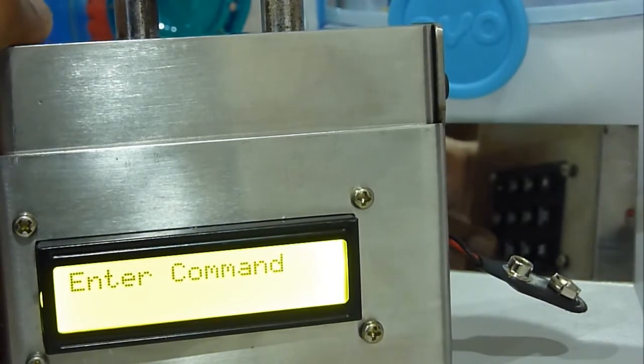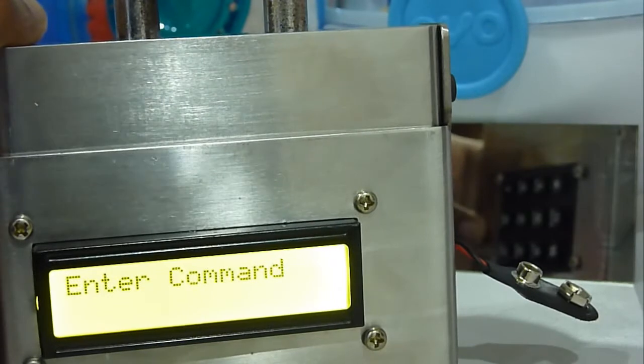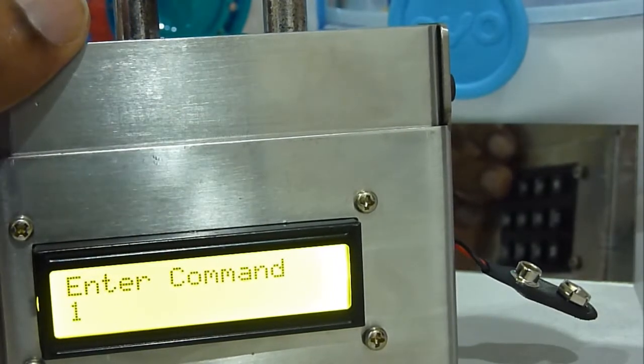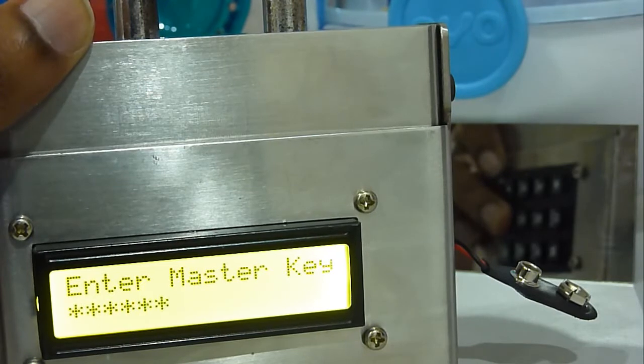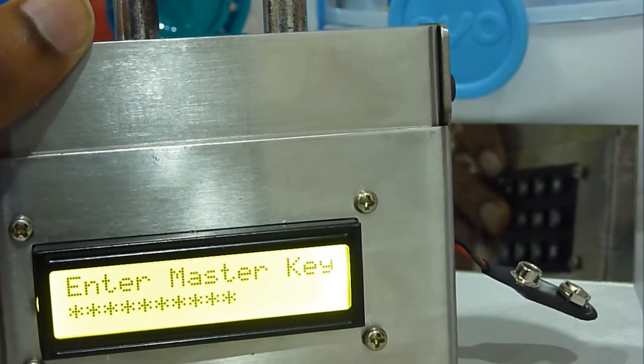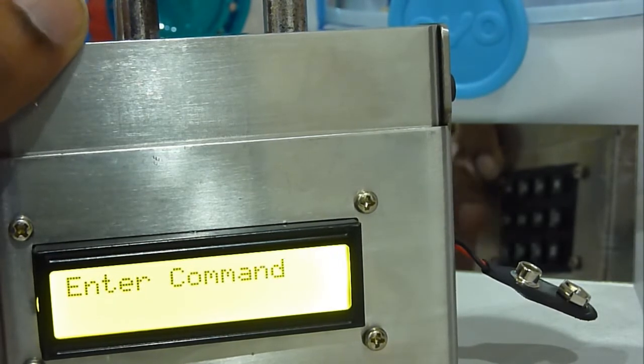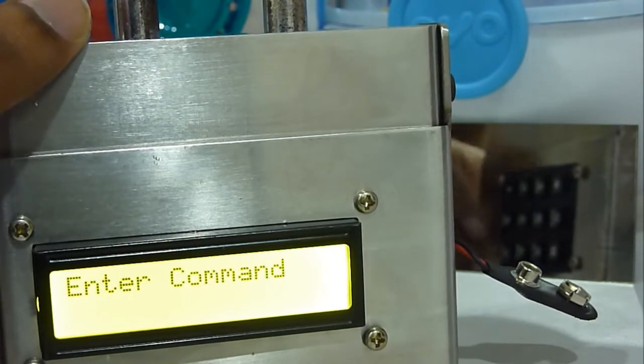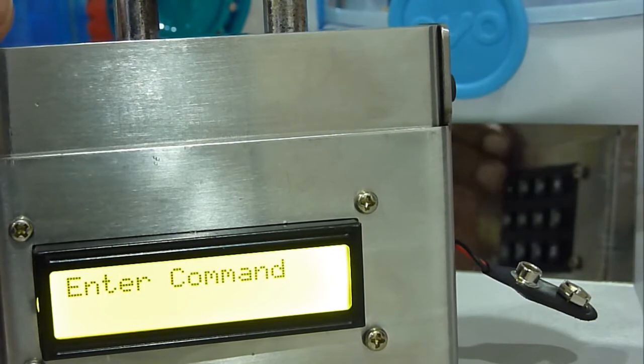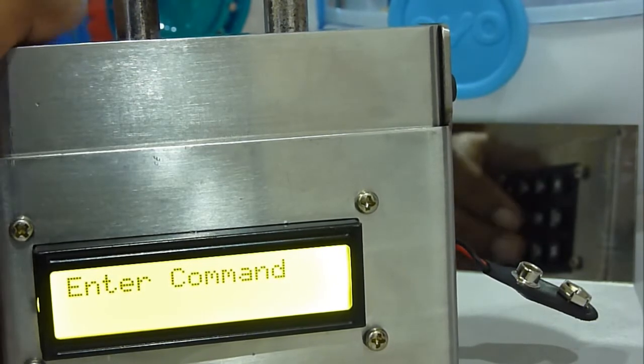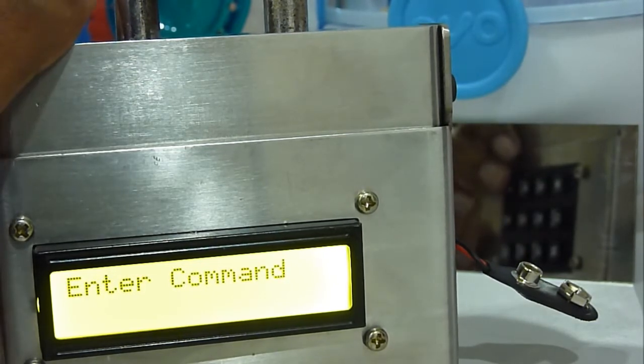Before I enter the master key, let me show you another feature here. When you press number three it will show you the number of failed attempts, meaning to say that if I am the original user I can check if there has been any attempt to unlock the padlock. Just press number three and it will show you the number of failed attempts.